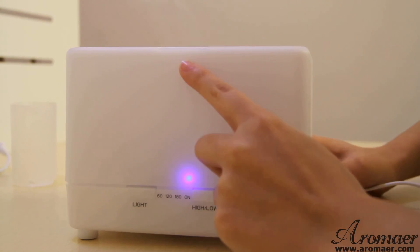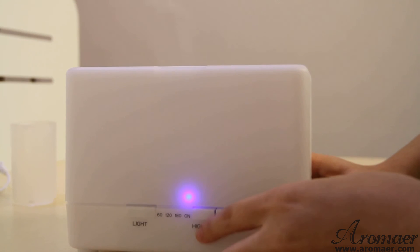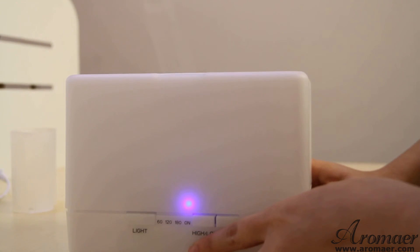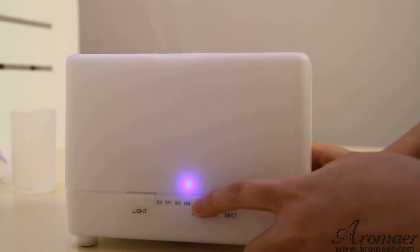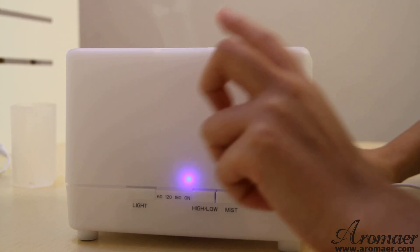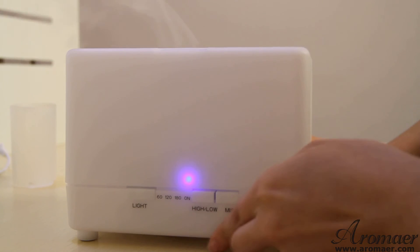And the mist can be controlled. Here is a high-low button. Press it. 1 beep, the mist will be bigger. 2 beeps, the mist will come out less.